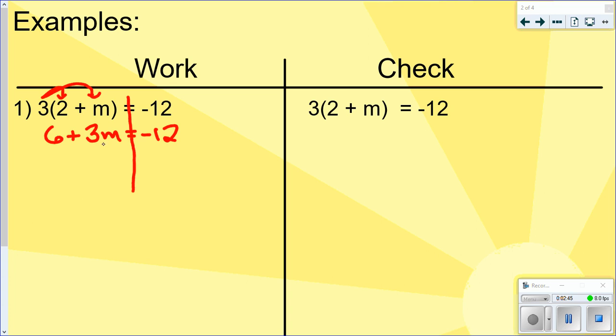Step two is to combine like terms if necessary. There is nothing here that I can combine together. The 6 and the 3m are not alike. I can't combine them. So now we're on to step three, which is to solve for the variable. Using opposite operations, get the variable by itself. To get rid of the 6, remember you do the adding or subtracting piece first. To get rid of the 6, I'm going to subtract 6 from both sides of the equation. 6 minus 6 is 0. So now I have 3m equals negative 12 minus 6 is negative 18.